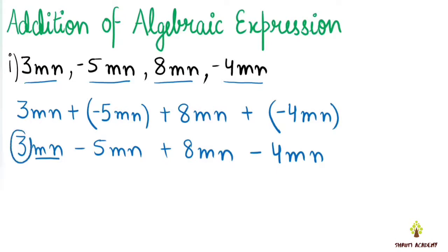And 3 is the numerical factor. If we have the term 3mn, then 3 is the numerical factor and mn is the algebraic factor. So here we have mn, here mn, here mn, and here mn — all are the same algebraic factor.